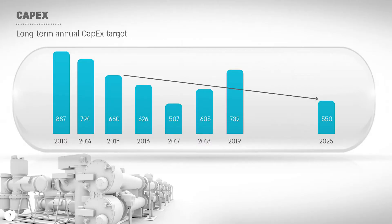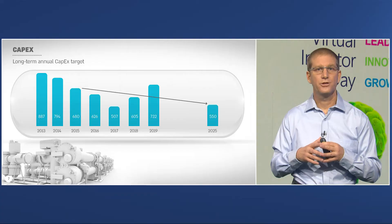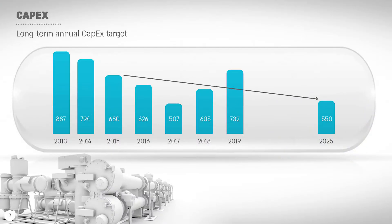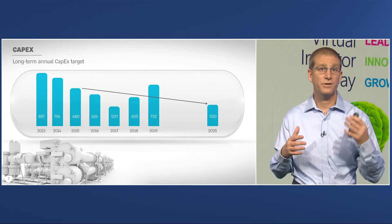Raviv already presented our CAPEX target. The main point I wanted to share is that going forward, we see CAPEX needs of around $550 million per year. This average targeted annual spend should cover our ongoing efforts to maintain all of our sites in optimal operational conditions, and is significantly lower than the CAPEX investments we made over the last five years, where we had to invest in significant infrastructure needs.